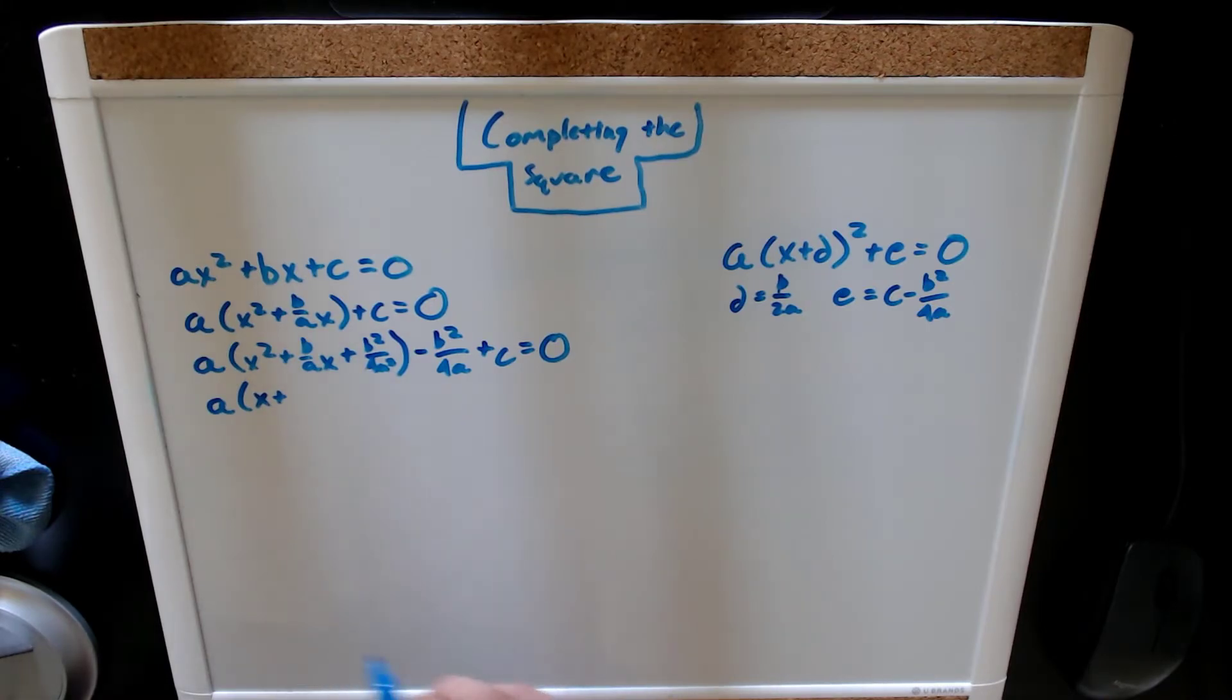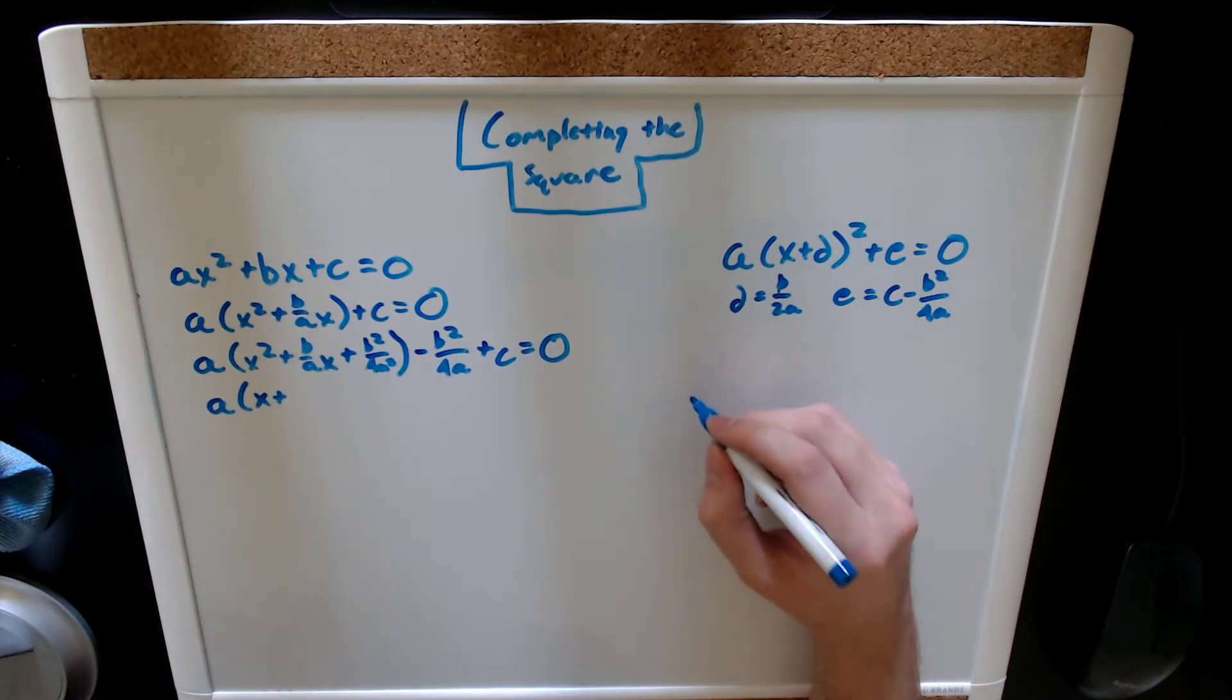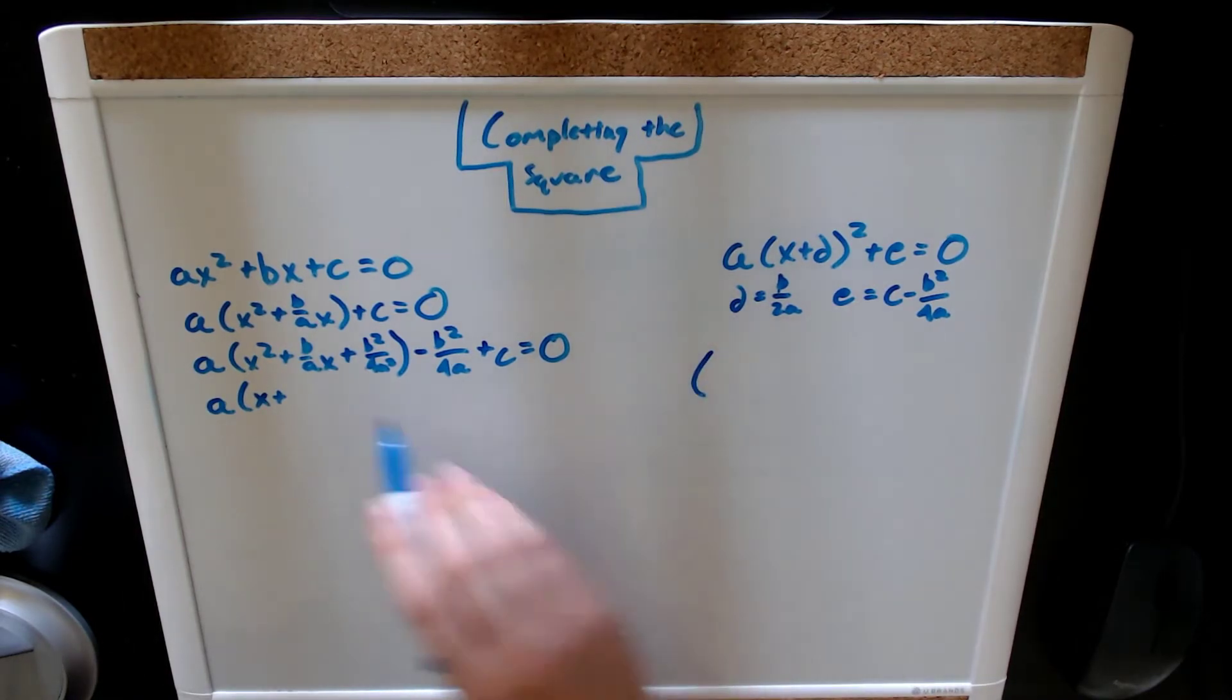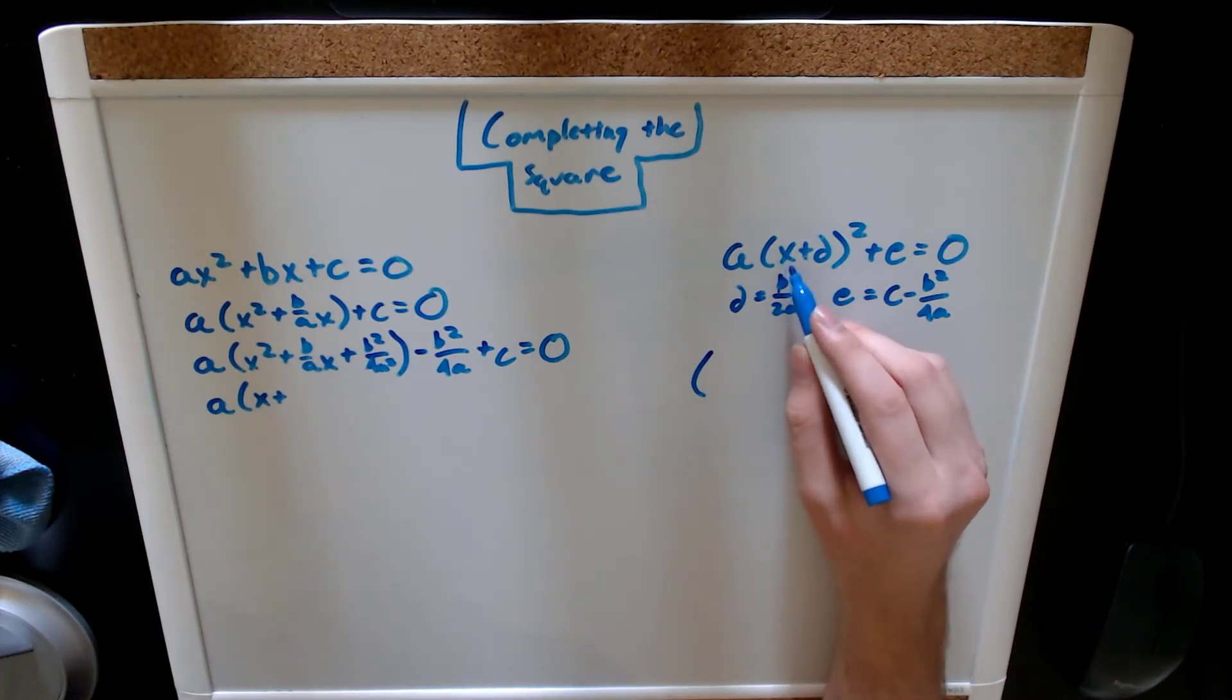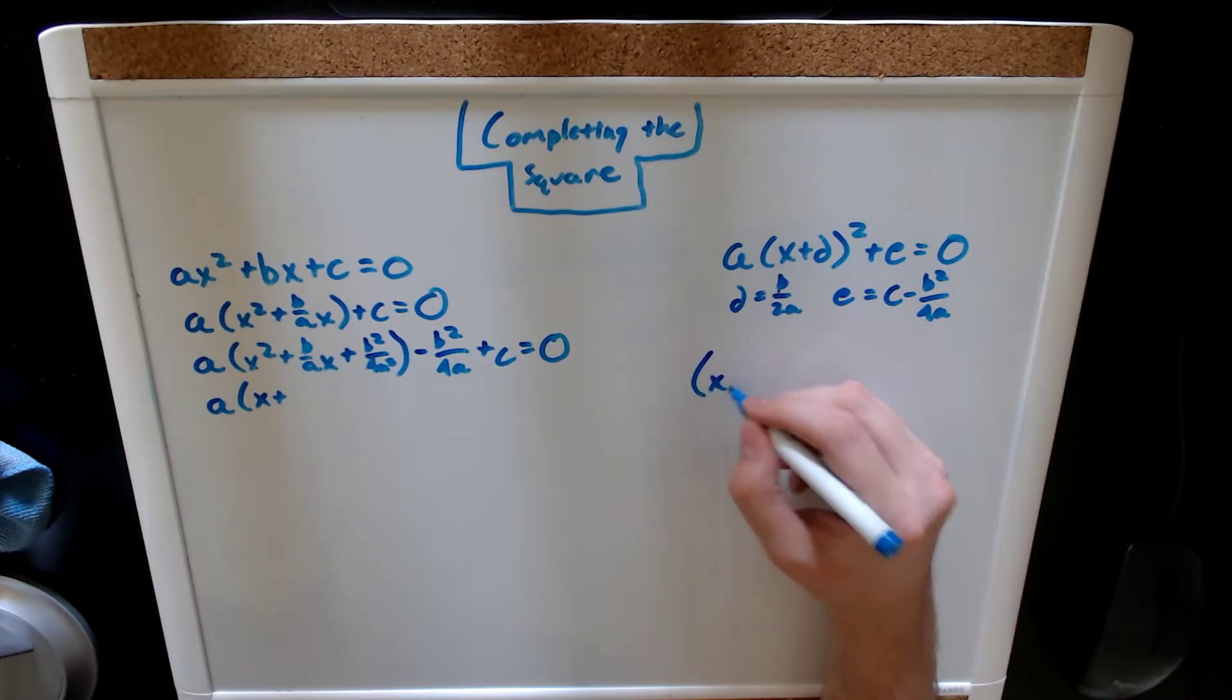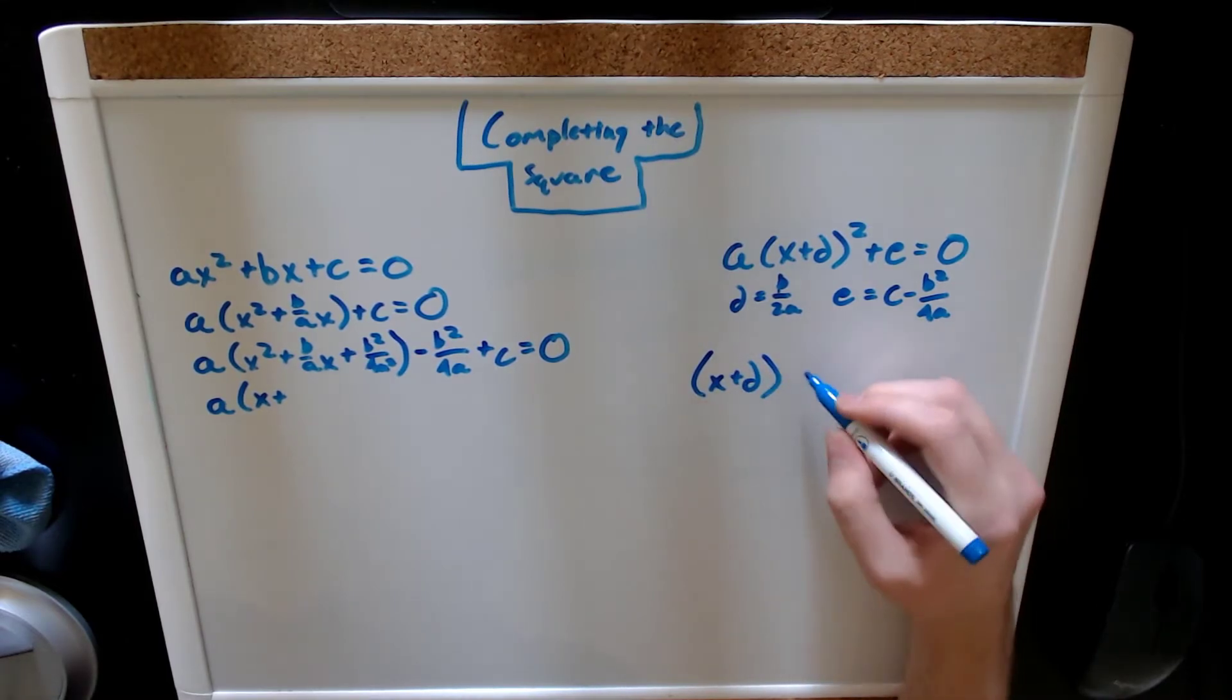Hold up. Let's take a second real quick and use something that we know in order to prove that, the FOIL method. So, I'm not going to have b over a, or b squared over 4a. I'm just going to have our x plus d squared, and we're going to FOIL this out.